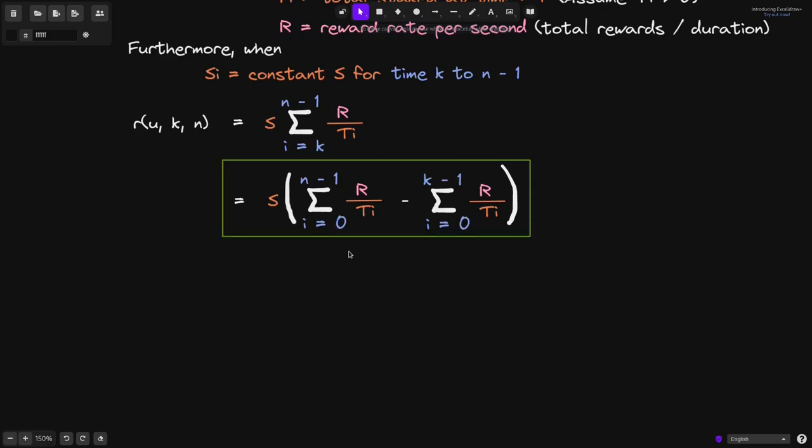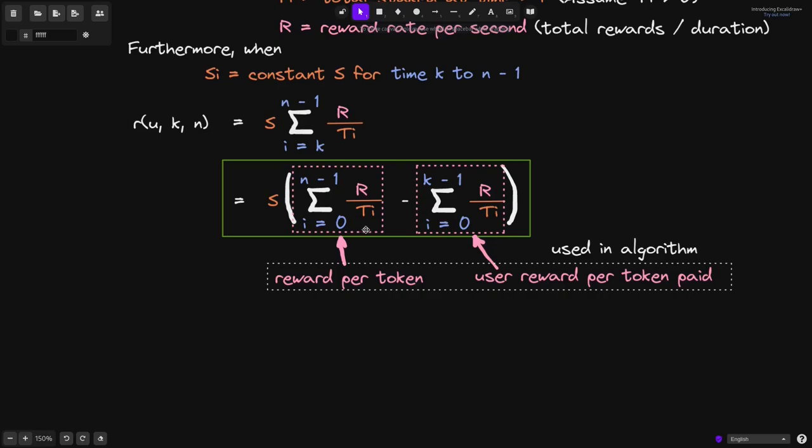And this is the final equation that is being used by the staking contract to calculate the amount of rewards earned by the user. Inside the staking contract, this part is stored in a variable called reward per token. Every time R, reward rate per second, or the total amount staked changes, this will be updated.